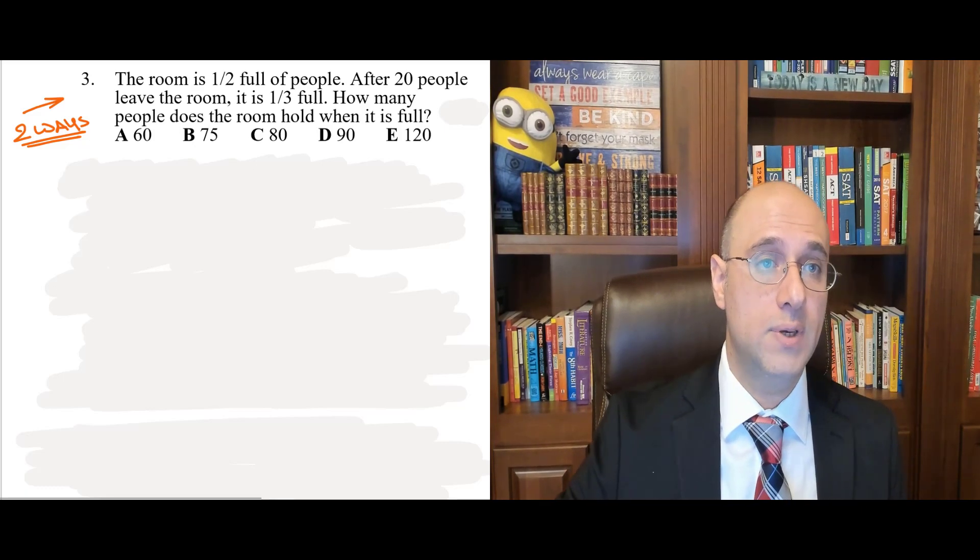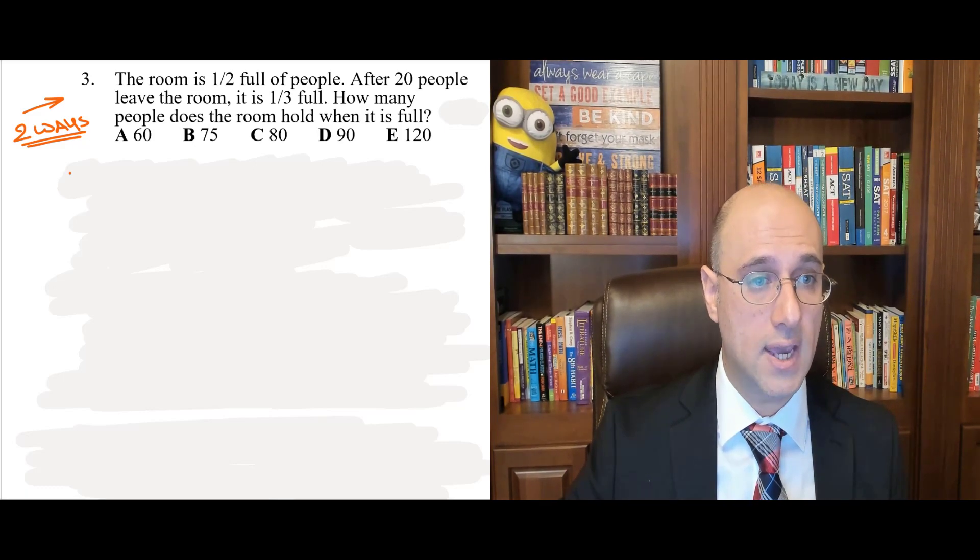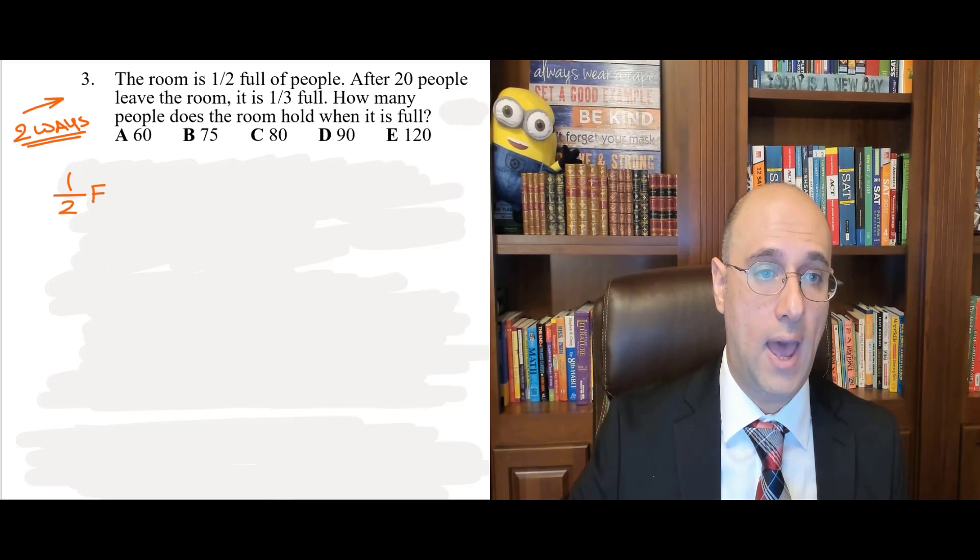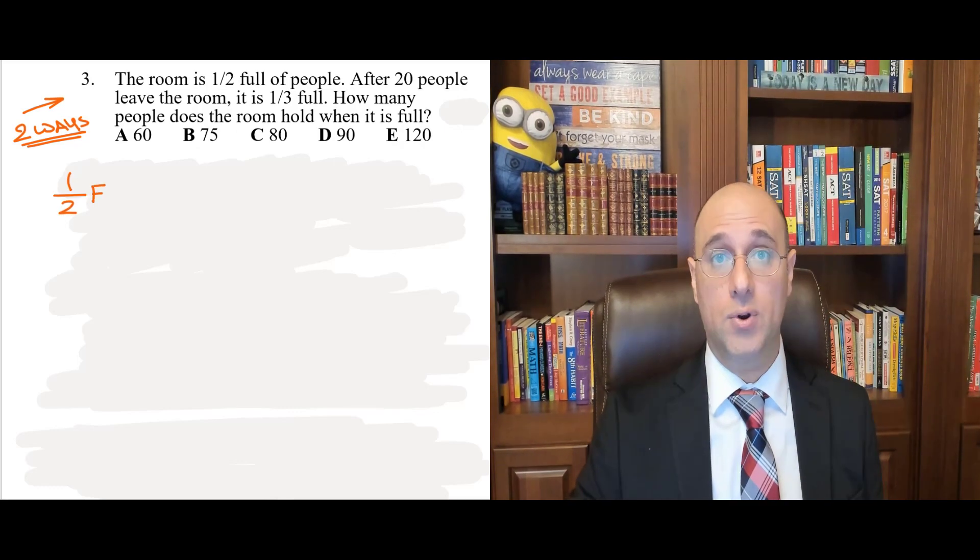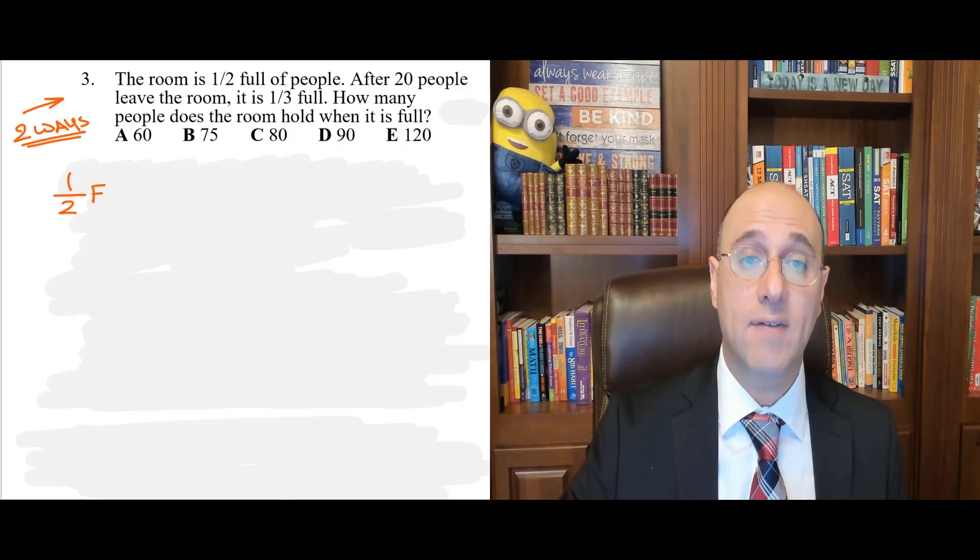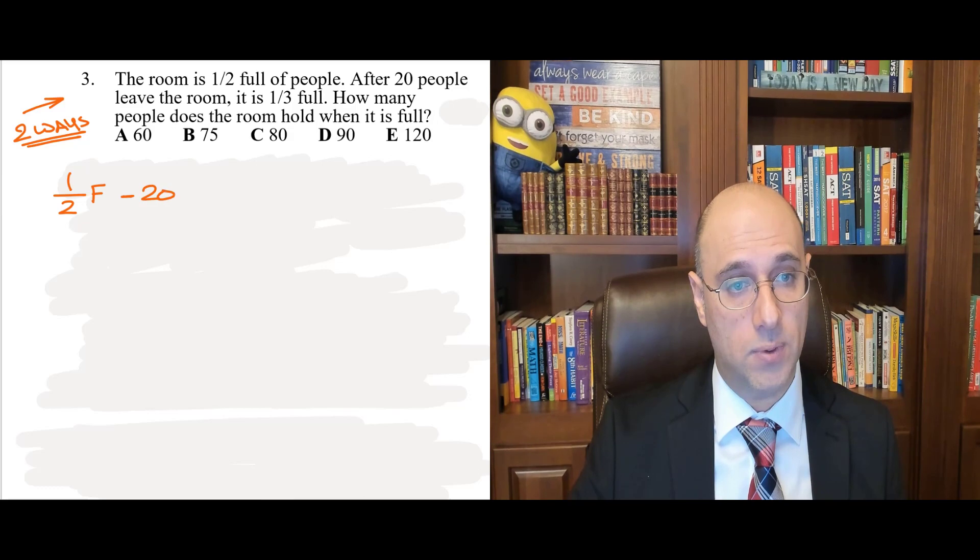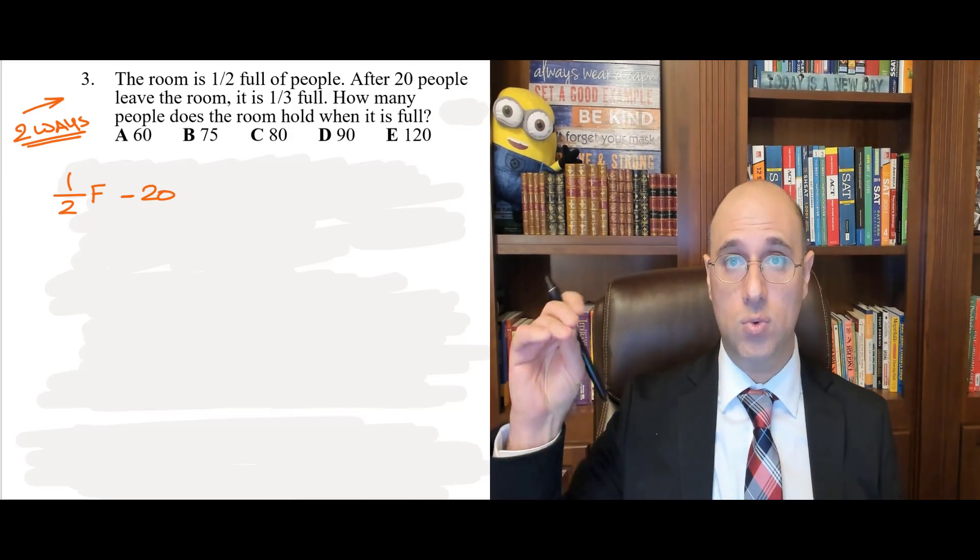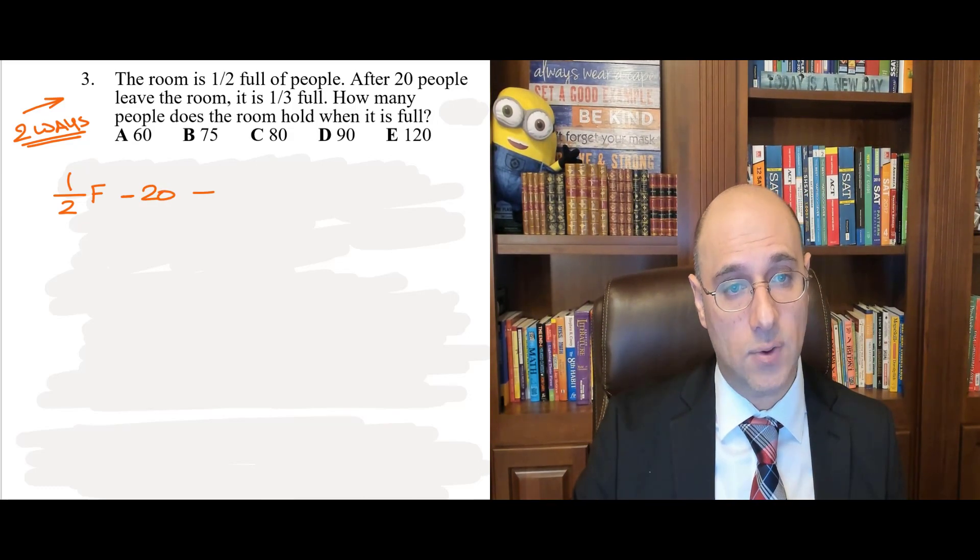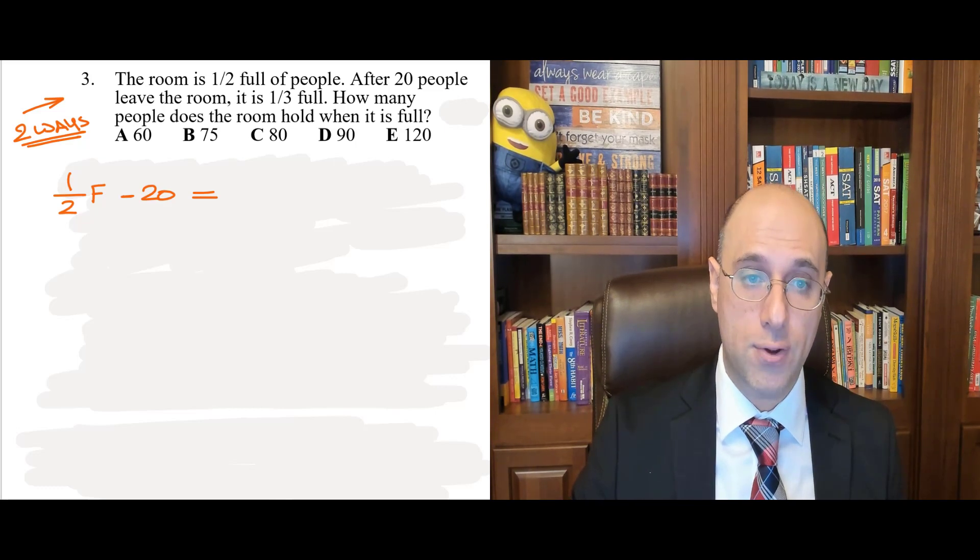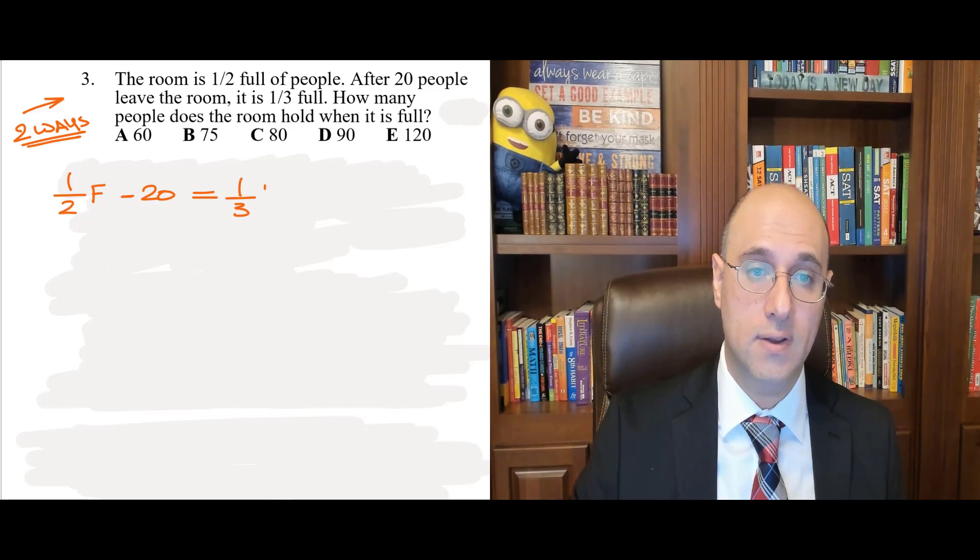The room is half full of people, so we just use algebra and say half full. So, one over two, F. F is how many people there are when it's full. After 20 people leave the room, so minus 20 people. So, it was half full, and then we removed 20 people. It is, so that's equals, a third full. So, one over three, F.